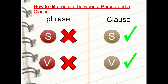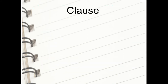So the difference between a phrase and a clause is: a clause is a part of a sentence that has at least a subject and a verb. The phrase does not have a subject and a verb; the clause must at least have a subject and a verb.